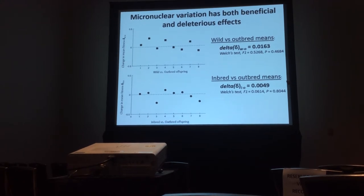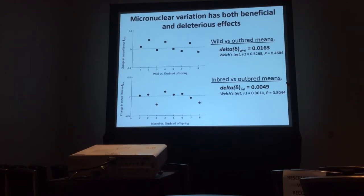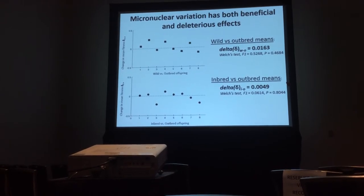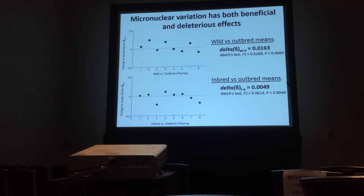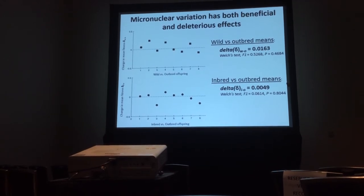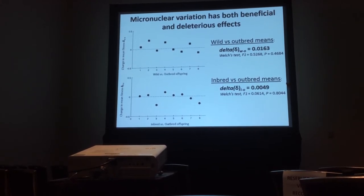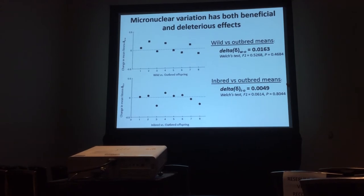We also find that micronucleus variation has both beneficial and deleterious effects. Looking at data comparing outbred offspring to wild strains and inbred offspring: the top graph shows the change in mean fitness for each outbred cross between the wild and the outbred offspring. There is variation; however, when we take it as a whole, the overall change in fitness is not significantly different from zero. When we look at the bottom graph — inbred versus outbred — we see the same thing: variation in fitness between inbred and outbred offspring, but the overall mean is also not significantly different from zero.